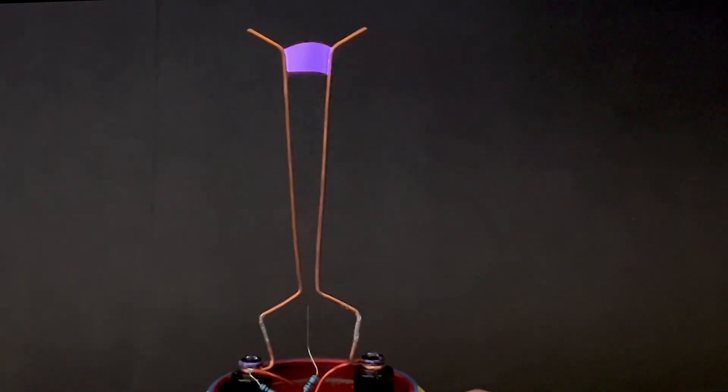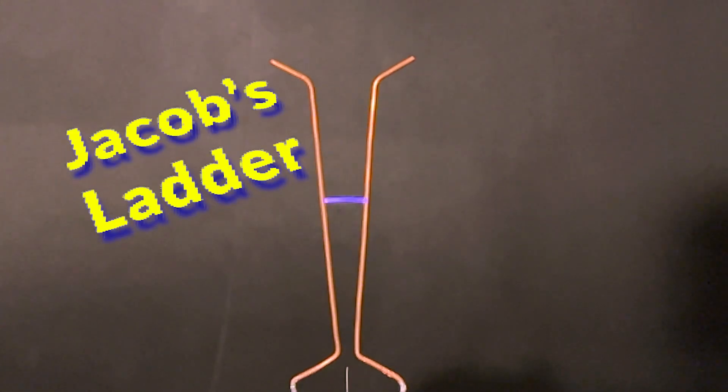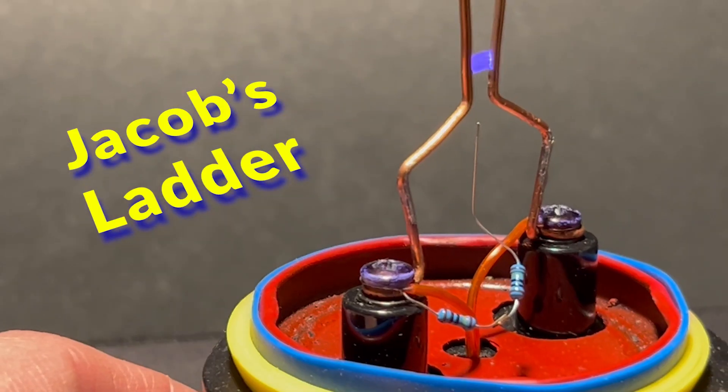And there you have it. It's just a 15,000 volt spark on my workbench. They call this kind of thing a Jacob's Ladder in the Science Museum.